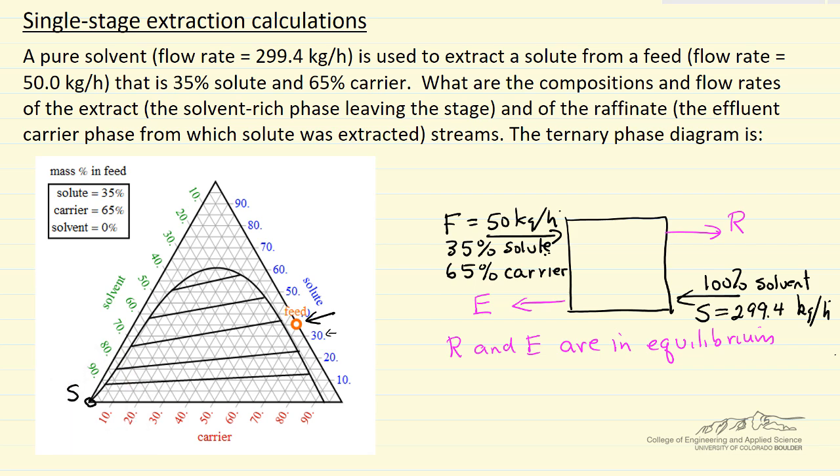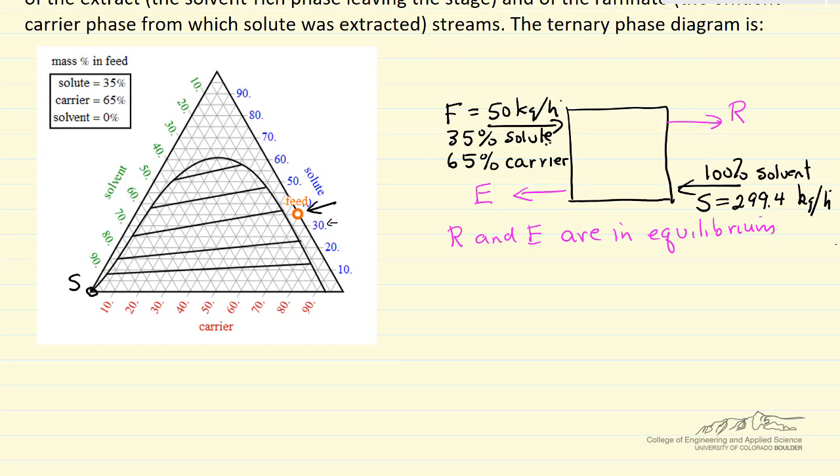So the next step is to locate the overall composition. If we just mix the solvent and the feed together, let's determine that composition. What I'm going to do is write down the contents of the mixture, and then calculate the mass fractions. So I'm going to write down the number of kilograms of each of these three components if we were to mix everything together, and then calculate the mass fractions for that mixture.